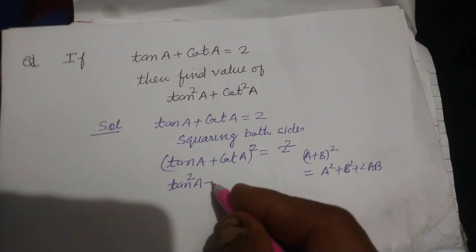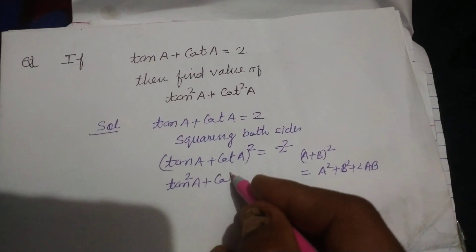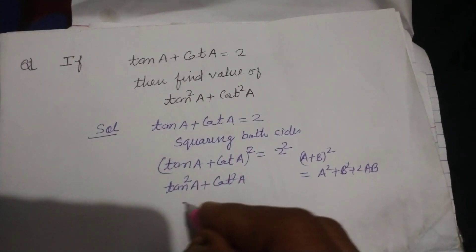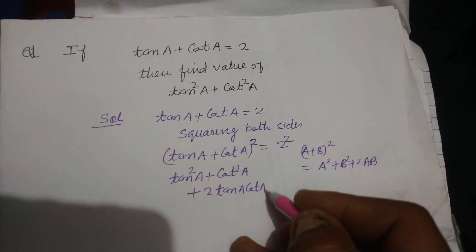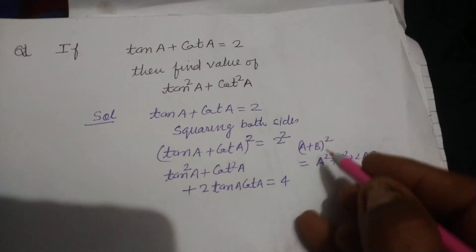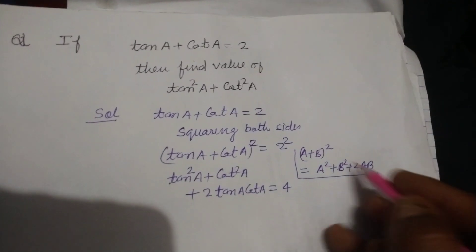Which is A squared plus B squared plus 2AB. So tan squared A plus cot squared A plus 2 tan A cot A equals 2 squared, which means 4. This is the formula.